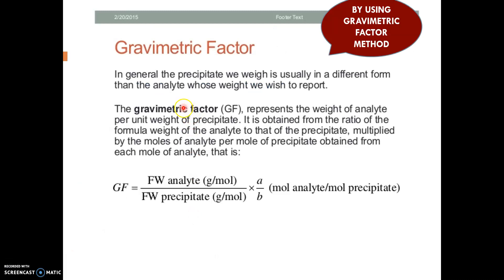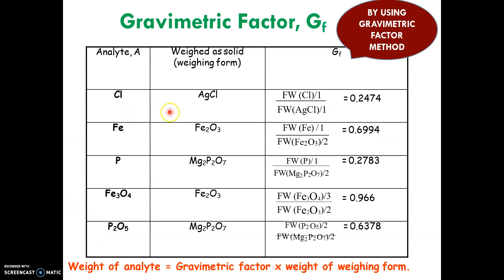The gravimetric factor method is quite easy compared to the chemical factor. First, you need to calculate the gravimetric factor: take the molar mass of your analyte divided by the molar mass of your precipitate, times their relative mole ratio in the molecular formula. This gives the gravimetric factor for each analyte and its weigh form.